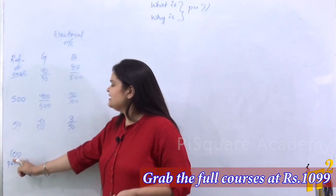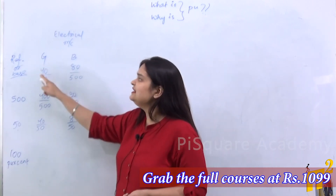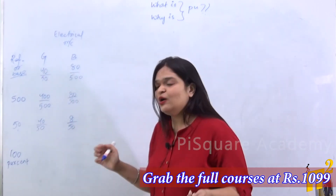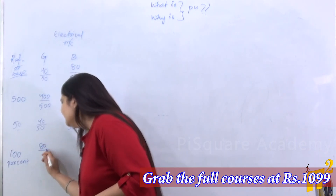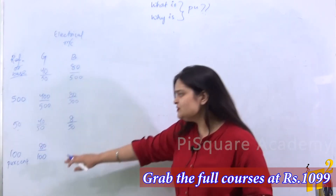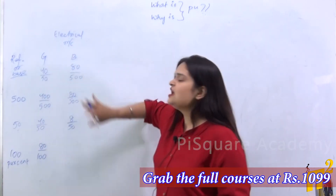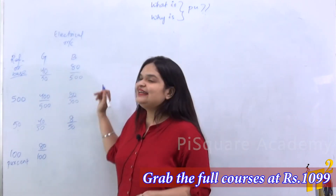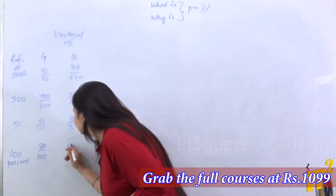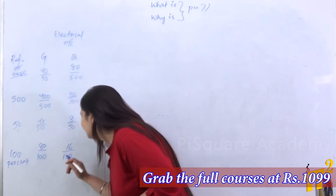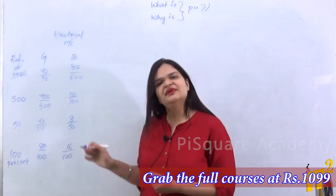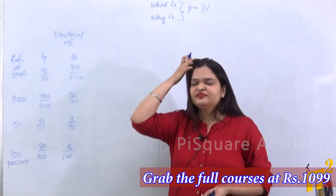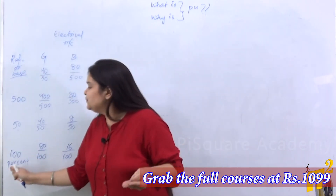If we take 100 as the reference, then for the girl: 40 by 50 multiplied by 100 equals 80 per 100, i.e., 80%. For the boy: 80 by 500 multiplied by 100 equals 16 per 100, i.e., 16%. So 'per cent' means 'per 100' — that is the value when the reference or base is 100.